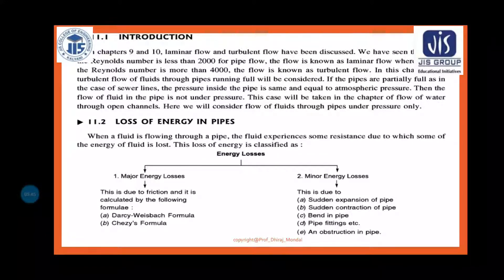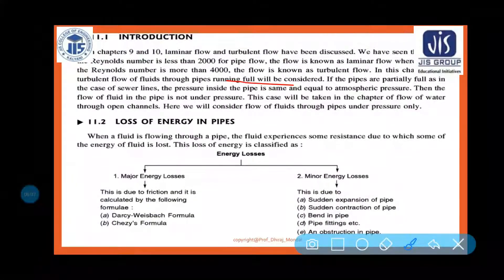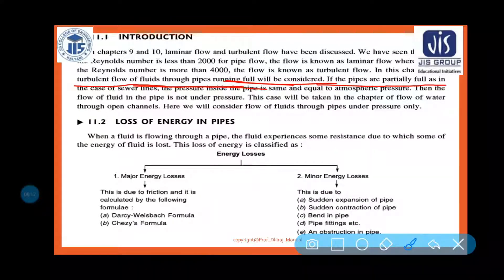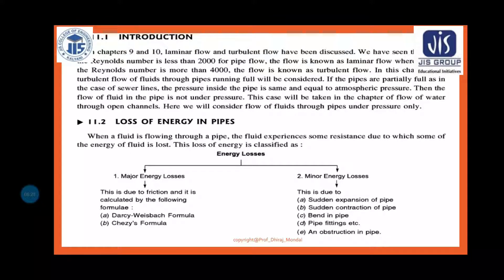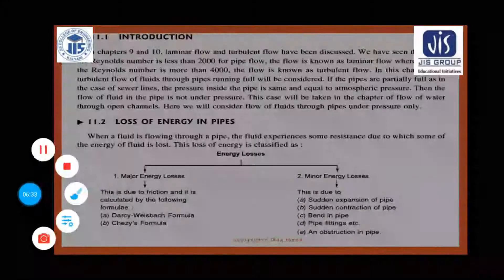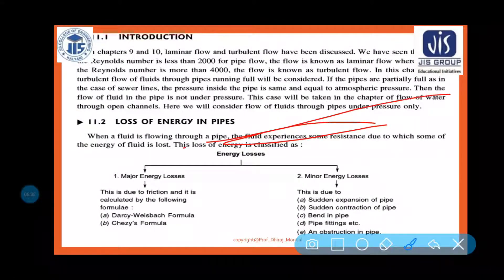In this chapter, turbulent flow of fluid through pipes running full will be considered. If pipes are partially full, as in the case of sewer lines, the pressure inside equals atmospheric pressure and the flow is not under pressure — that case is handled in the chapter on flow through open channels. Here we consider only pipe flow under pressure.